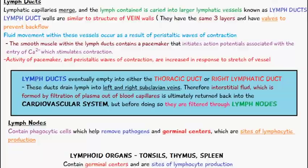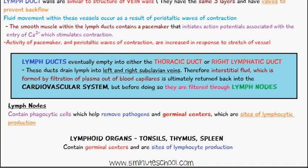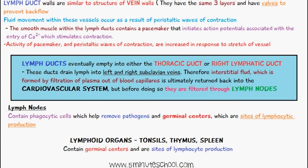Lastly, lymph nodes contain phagocytic cells which help remove pathogens, and they also contain germinal centers which are sites of lymphocyte production. The lymphoid organs are the tonsils, the thymus, and the spleen, and they contain the germinal centers and are sites of lymphocyte production. The lymph nodes act as a filter to help phagocytose microorganisms and clean up the lymph which was initially absorbed into the lymphatic vessel.